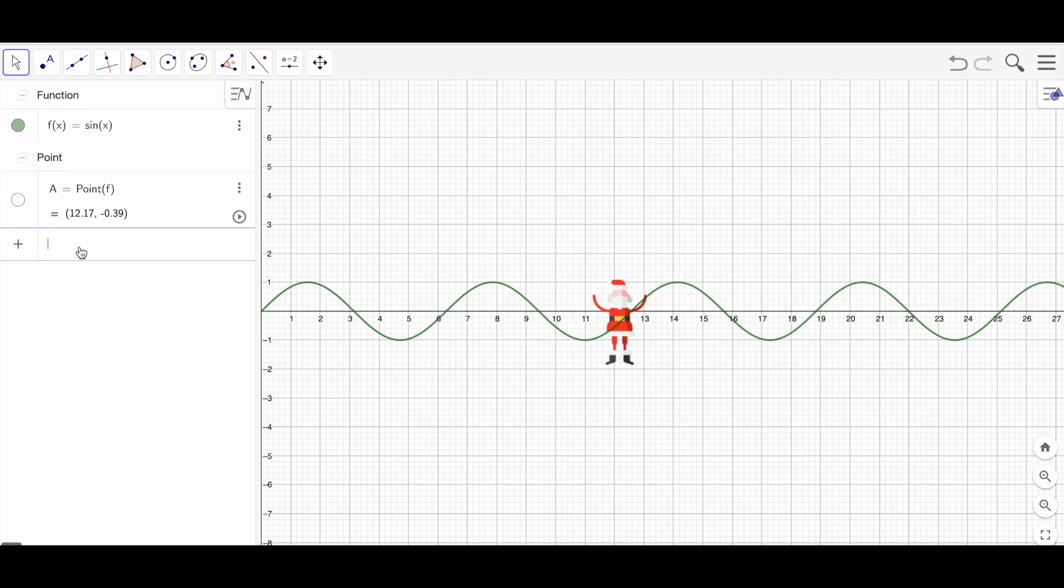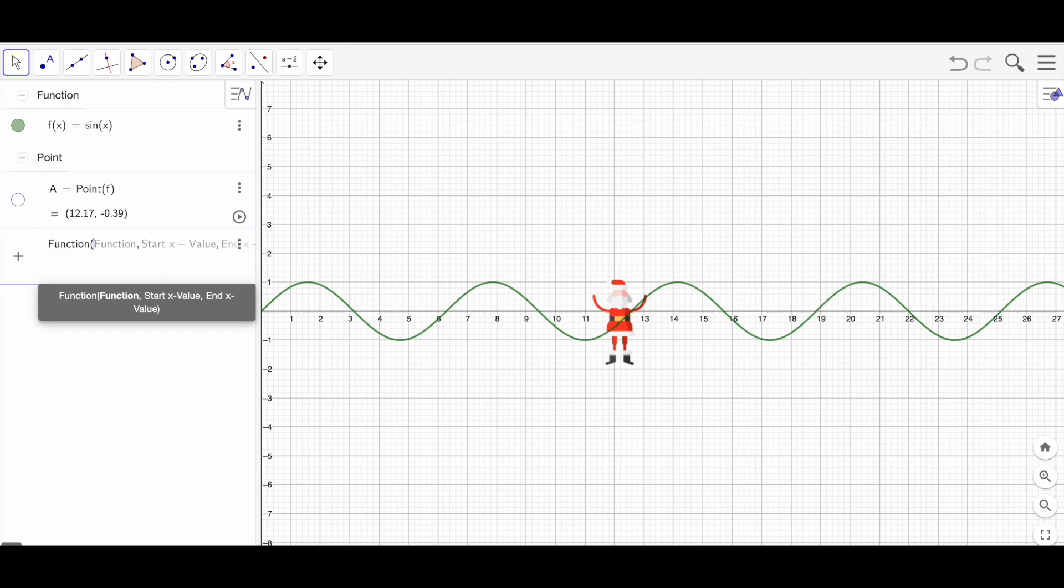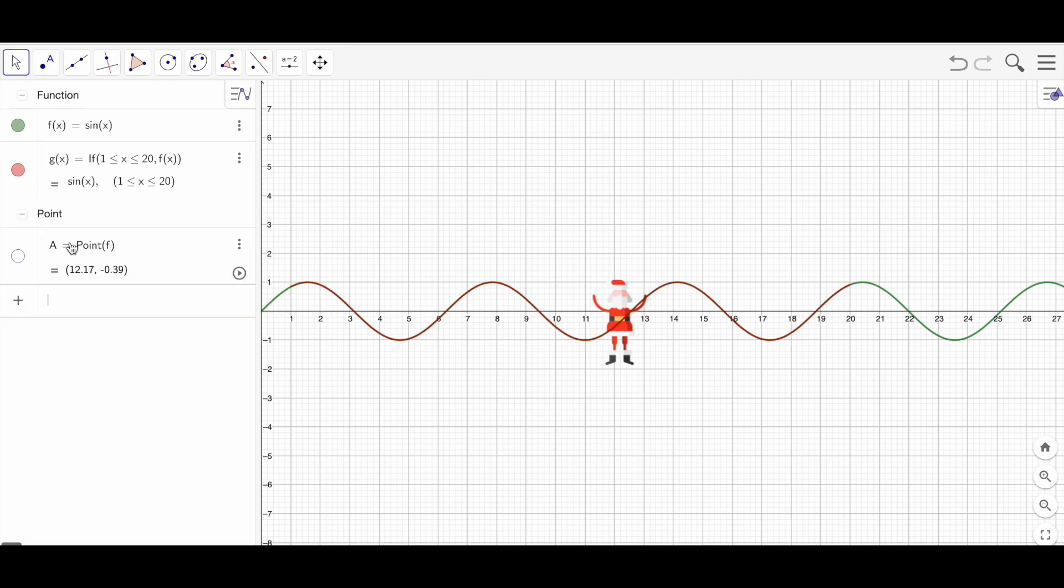Now I'm going to actually restrict my function. Simply write function and choose the second option. Now we have function f, start value. We can start from let's say 1 and then go until let's say 20. In this way I'm going to hide my function f and the second thing I'm going to do...